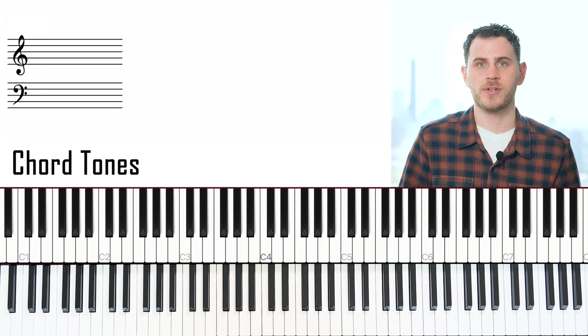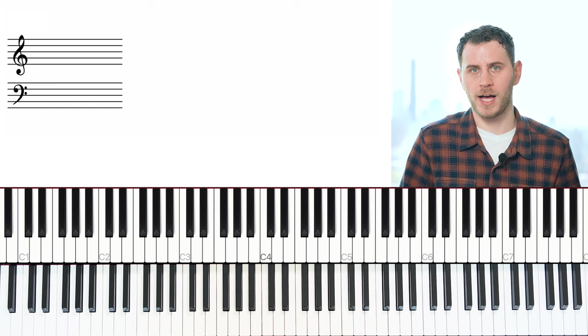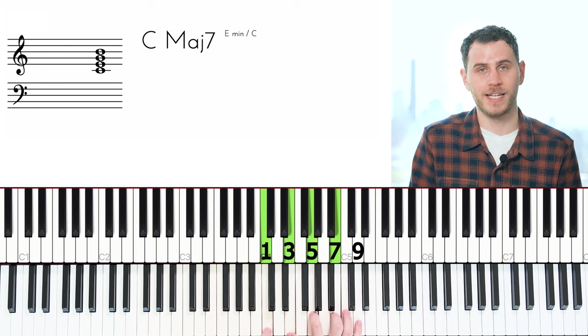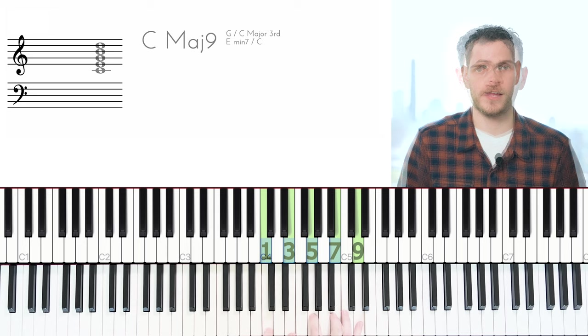Chord tones are really important for making a melody or line sound melodic. Now the chord tones are really just the 1, 3, 5, and 7 of any chord. So let's say we have a C major 9 and it's built 1, 3, 5, 7, 9. Well the chord tones are going to be those first 4, the 1, 3, 5, and 7.